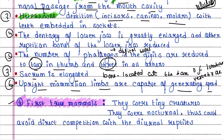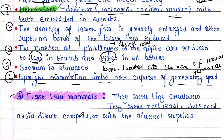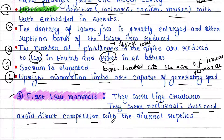The last theory concerns the first true mammals. The first true mammals were very tiny creatures — not large ones. They were nocturnal, and thus they could avoid direct competition with the diurnal reptiles.